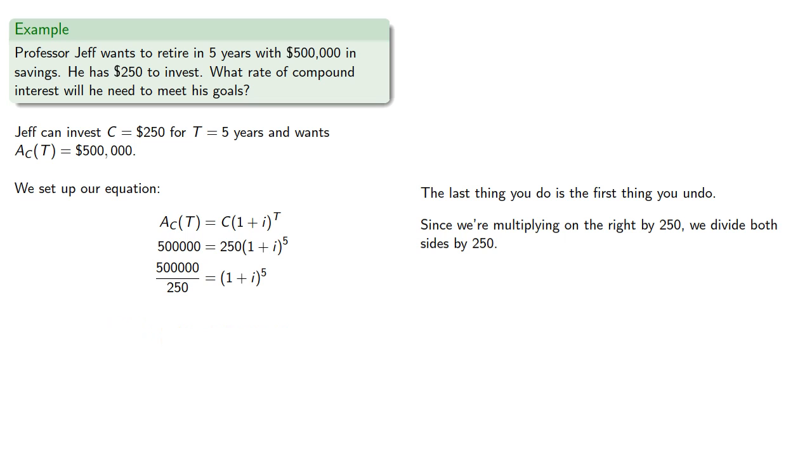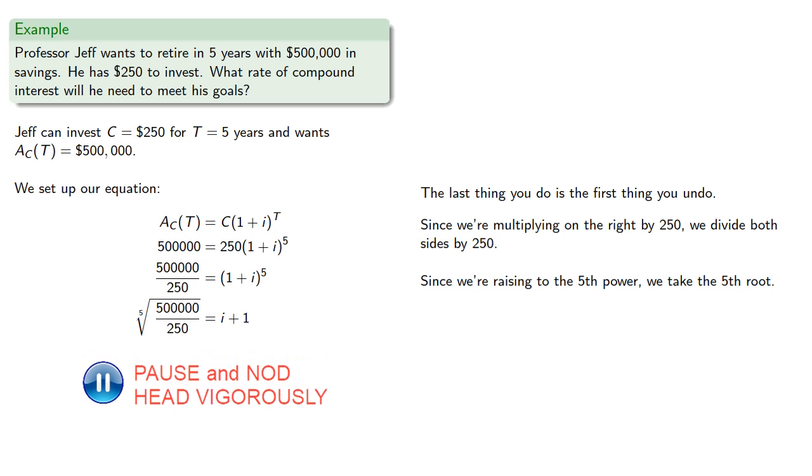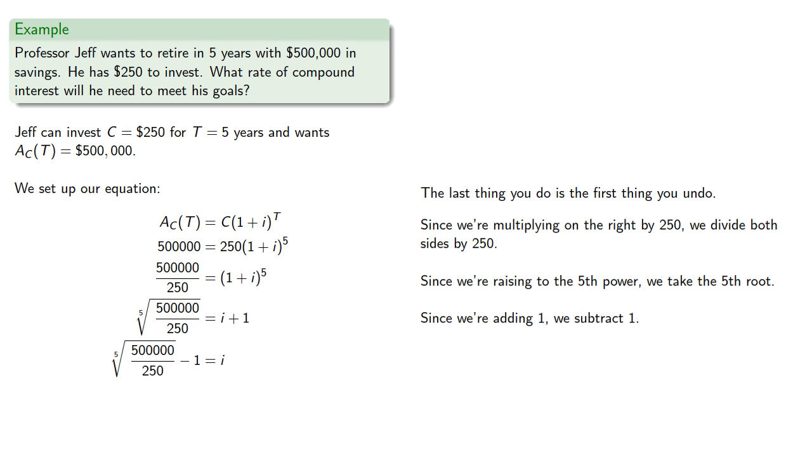Now the right-hand side is a fifth power, and since we're raising to the fifth power, we undo by taking the fifth root. Now we're adding 1. Since we're adding 1, we subtract 1 to get I, which we can now approximate.